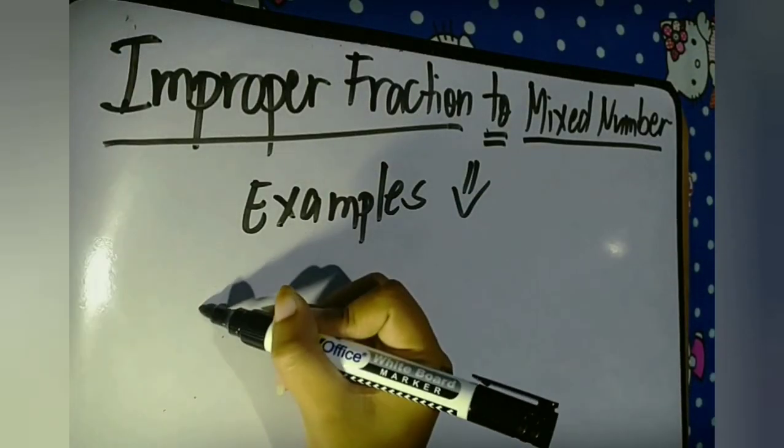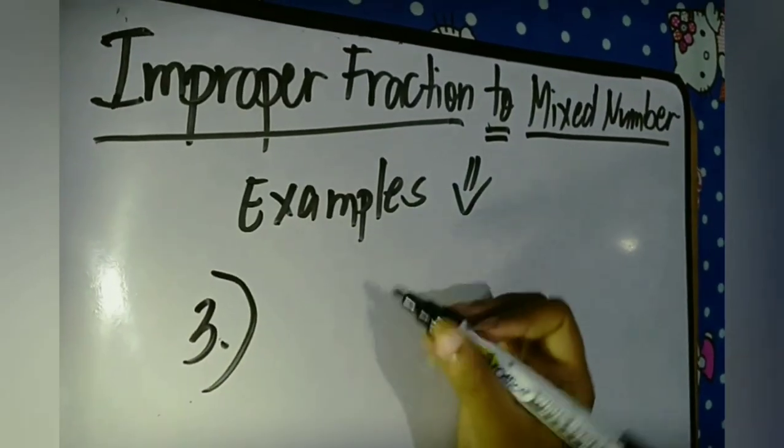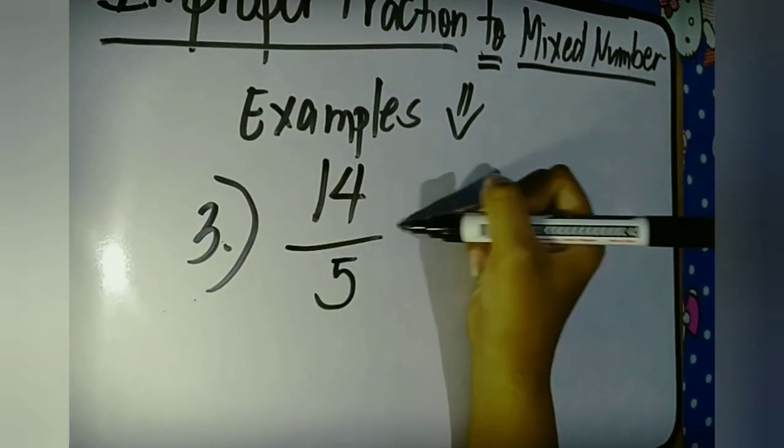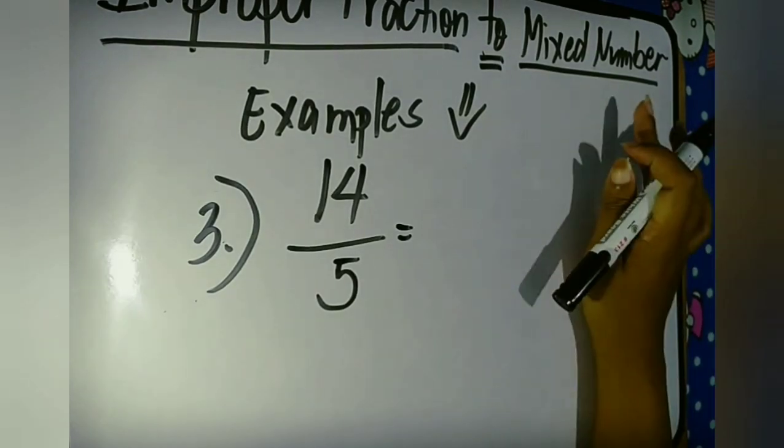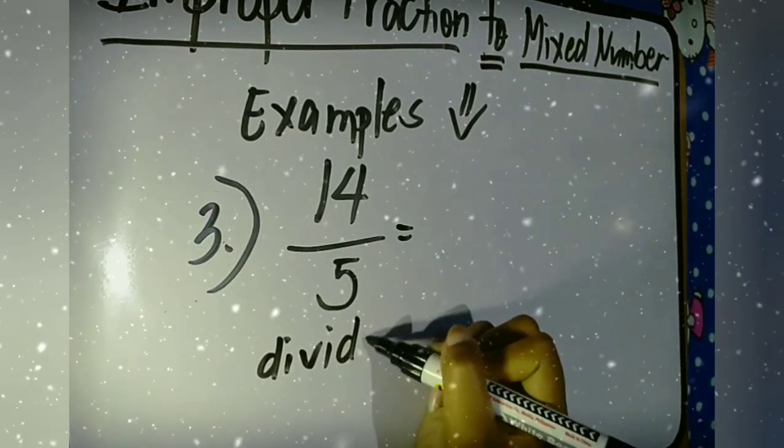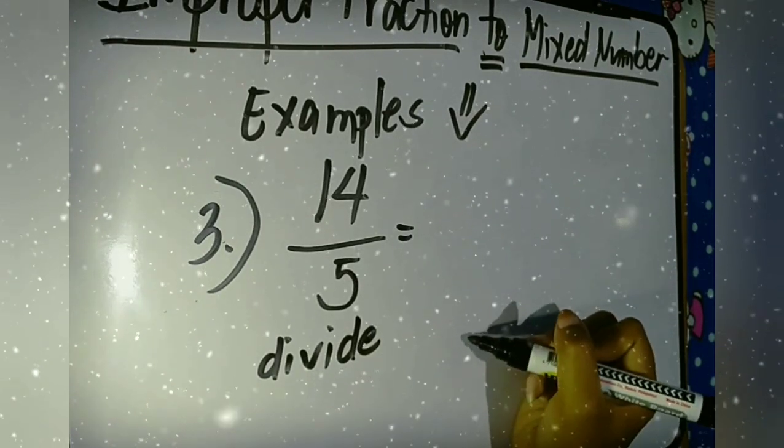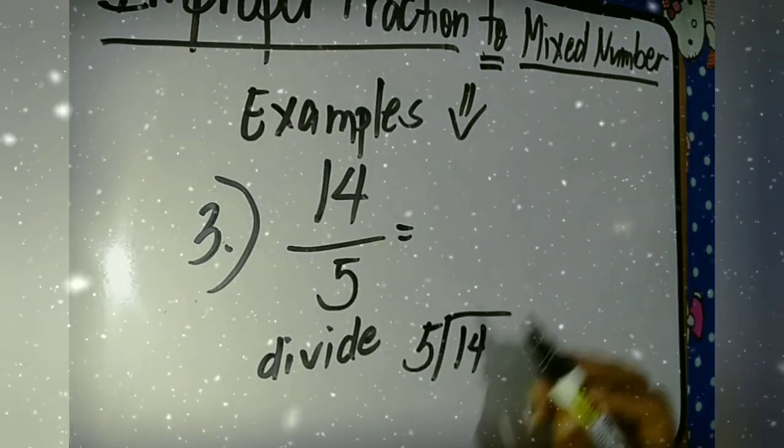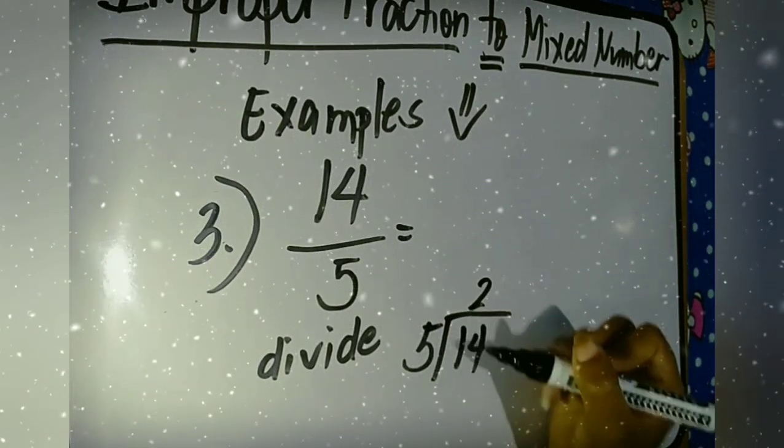Okay, number 3 example. What is the mixed number of the improper fraction 14 over 5? Again, we will just divide. So 14 divided by 5. And 14 divided by 5, the answer is 2.